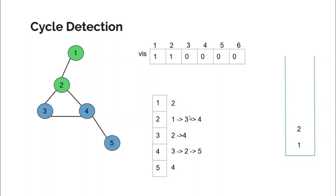We move to node three. Since node three is not visited, we make a DFS call to node three passing two as its parent. In the adjacency list of node three we have two, and two is already visited. We check whether this is a back edge. Since the parent of three equals two, this cannot be a back edge, so we continue and come to node four, which is not visited, so we make a DFS call to node four passing three as its parent.